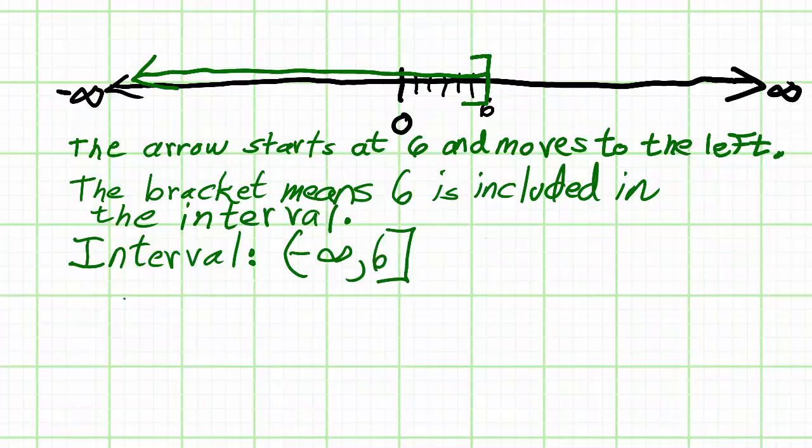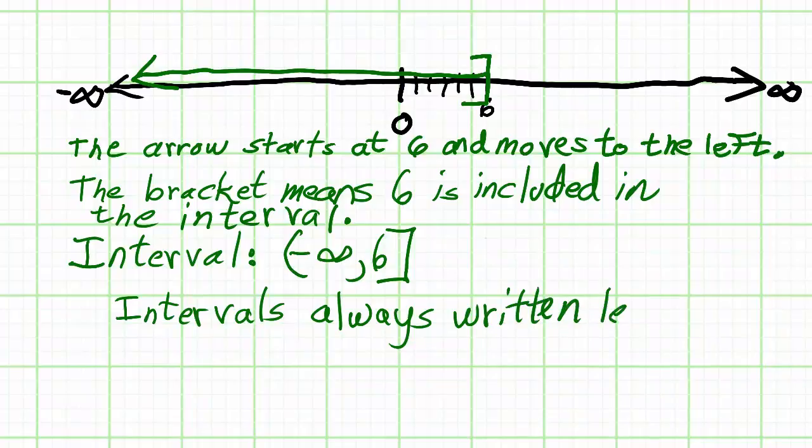The reason for the parenthesis around negative infinity is that negative infinity and positive infinity always take a parenthesis. They never, ever, ever take a bracket, even when a bracket is being used in the other position.